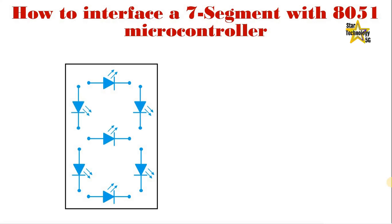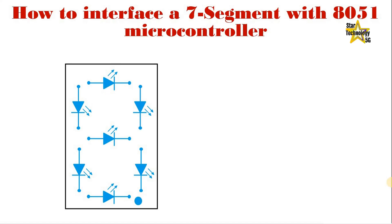An additional 8th LED is sometimes used within the same package, thus allowing the indication of a decimal point, DP. Each of the 7 LEDs is called a segment.